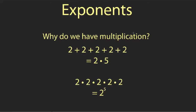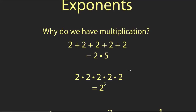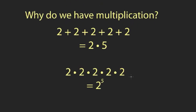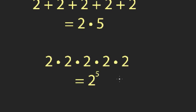Let's talk about exponents. To motivate the idea, consider multiplication — we have multiplication as a shorthand for successive addition. For example, two times five is faster than writing out five twos added together. Exponents arise in the same fashion: they're a shorthand for successive multiplication. So if I have a number multiplied with itself five times, like two times two times two times two times two, it's easy to write that as two to the fifth power.